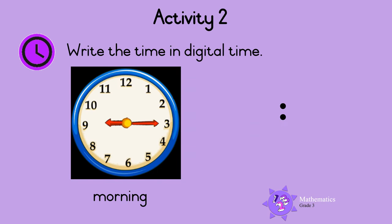Activity 2: Write the time shown in digital time. The minute hand points to 3 — this shows 15 minutes. The hour hand is just after 9, so it is still the 9th hour. So this time is quarter past 9 in the morning. Well done!